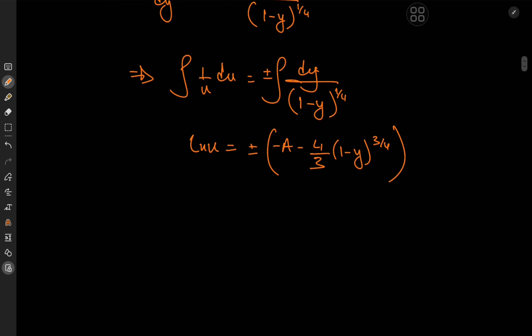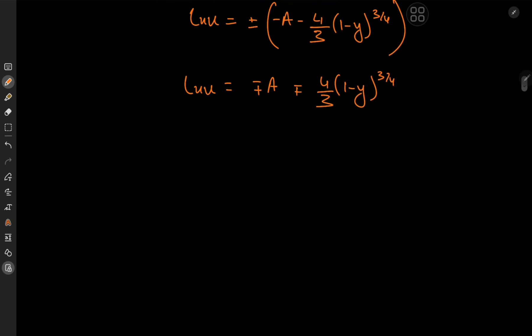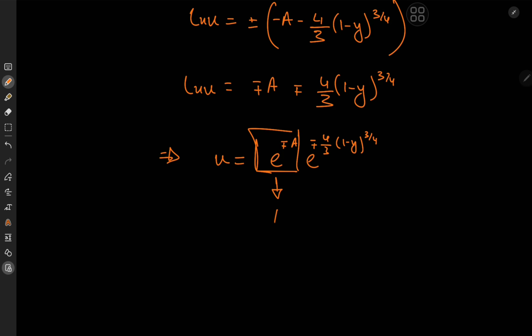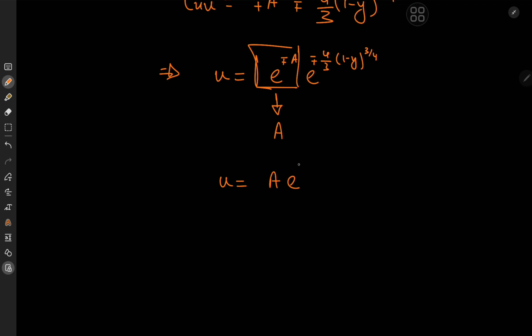That is just my OCD kicking in — and it's kicking in for a reason. So we have log u equal to ∓a ∓ (4/3)(1 minus y)^(3/4). Exponentiating gives u = e^(∓a) · e^(∓(4/3)(1 minus y)^(3/4)). Since e^(∓a) is just another constant, we absorb it into a, giving u = a · e^(∓(4/3)(1 minus y)^(3/4)).